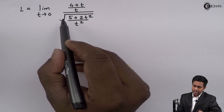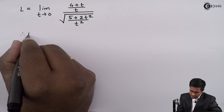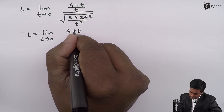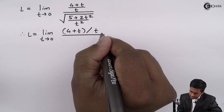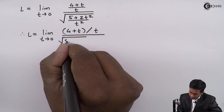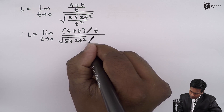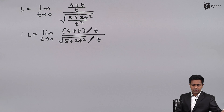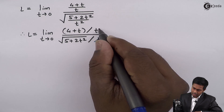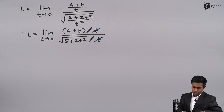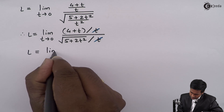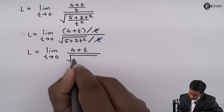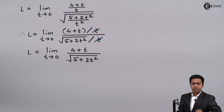Taking the square root of the denominator, we get L as the limit t tends to 0 of (4 + t)/t divided by √(5 + 2t²)/t. Since √(t²) = t, we can cancel t from the numerator and denominator, giving L equals the limit as t tends to 0 of (4 + t) divided by √(5 + 2t²).